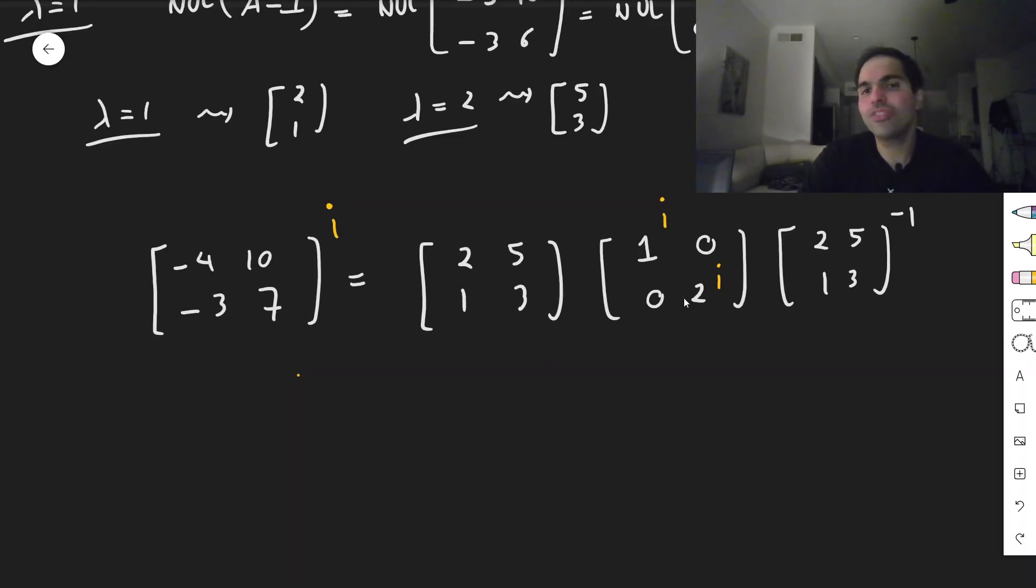Because remember, to square a matrix, you just square the diagonal entries. To do e of a matrix, you e the diagonal entries, and why not the same with the i-th power? Why not?